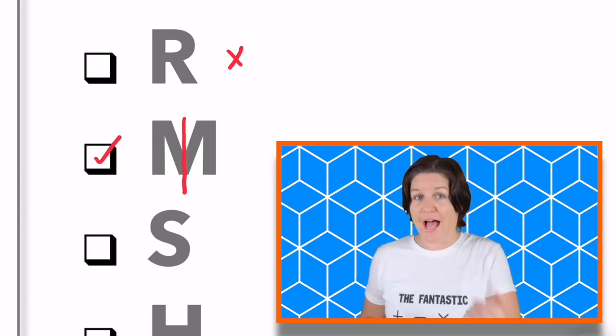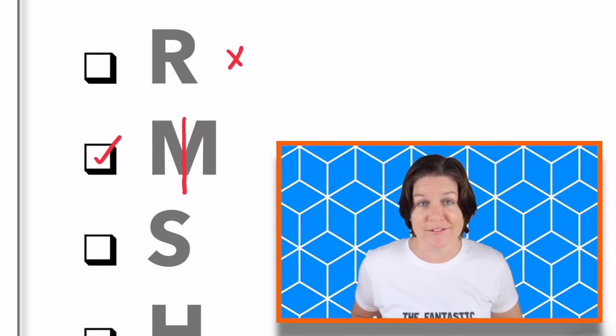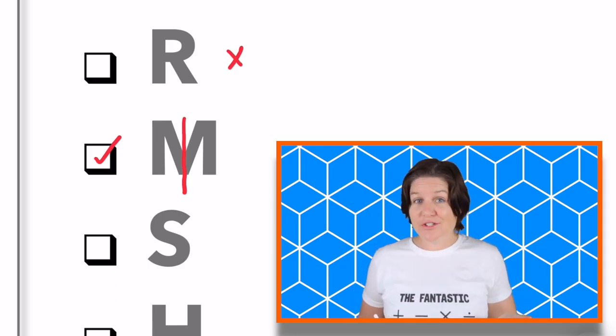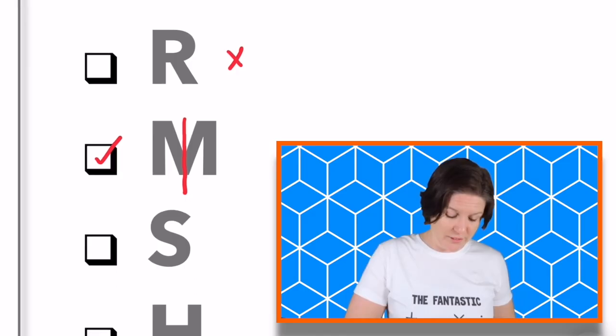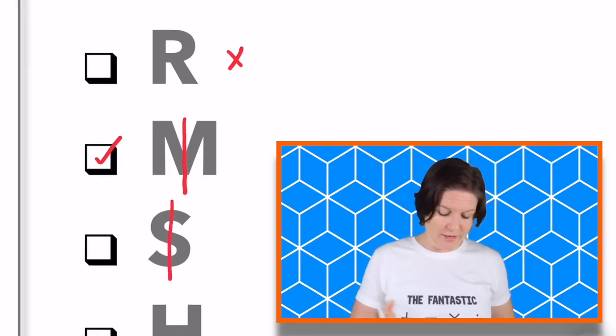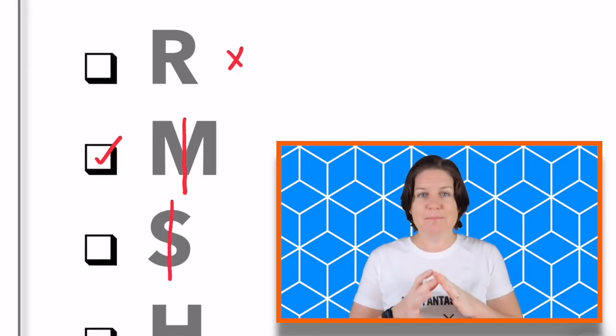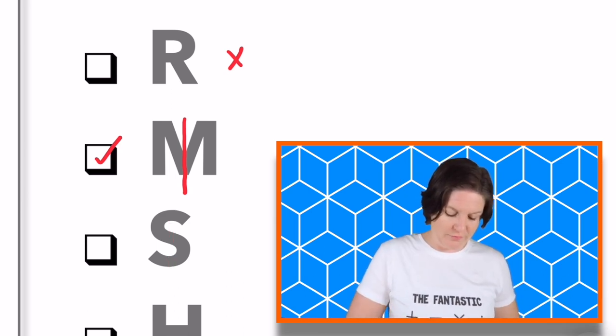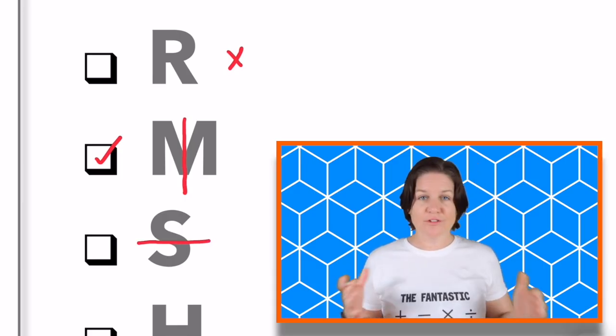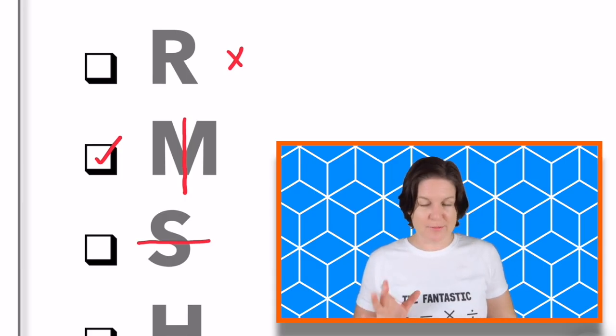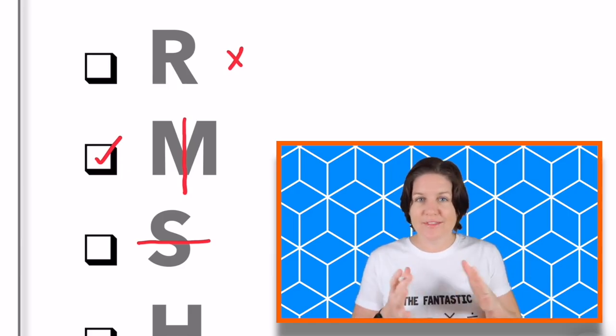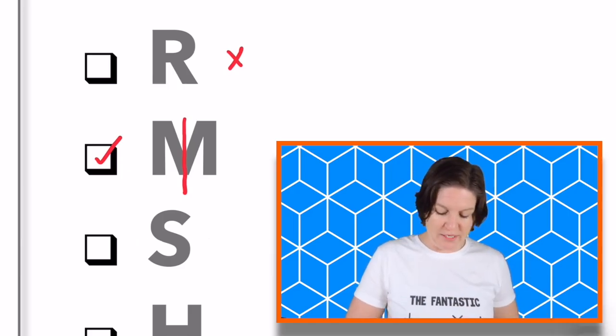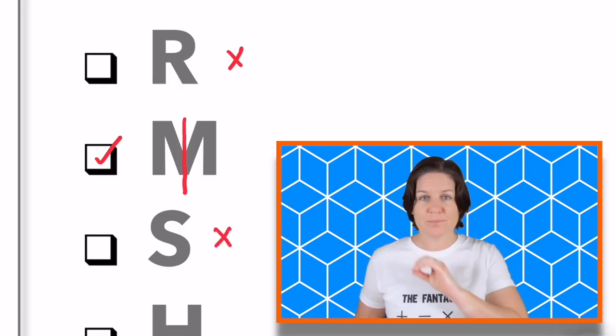For the letter S, how many lines of symmetry did you find? All right, it is actually zero, because if you were to create a line going straight down and fold it, they would not be mirrored images on each side. The same would be true if we went from side to side right here. It kind of looks like there could be lines of symmetry, but if you were to actually fold it, they would not match up. So for the letter S, we can eliminate that one, and there are zero lines of symmetry.